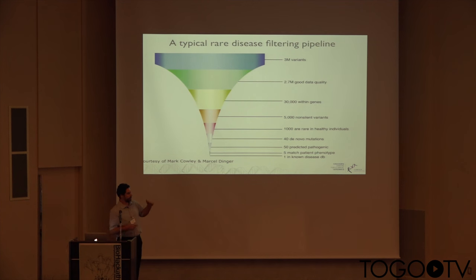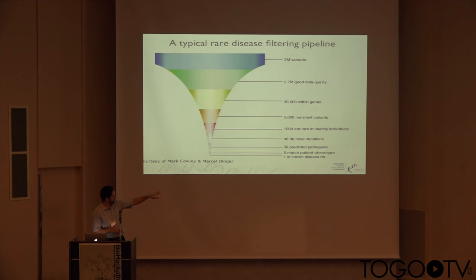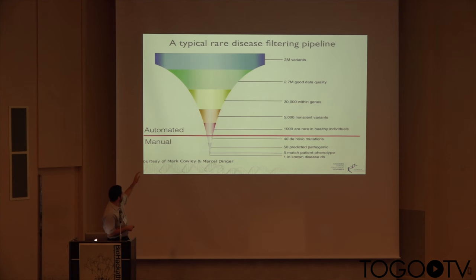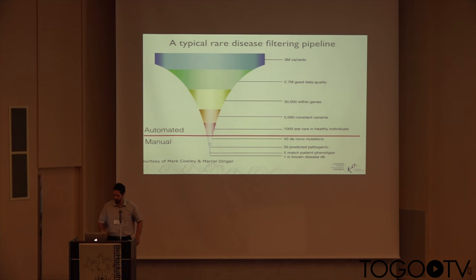A standard rare disease filtering pipeline starts from the 3 million variants. You slowly go through 2.7 million if you have good data quality, around 300,000 which are within genes, down to perhaps 40 de novo mutations, around 50 predicted pathogenic using other databases, and at the end one matched in a known database. Most processes above a certain threshold are automated using things like the 1000 Genomes Project, getting you to around 100 variants quickly. But then it's all about trying to find manually that one single variant that causes the disease.